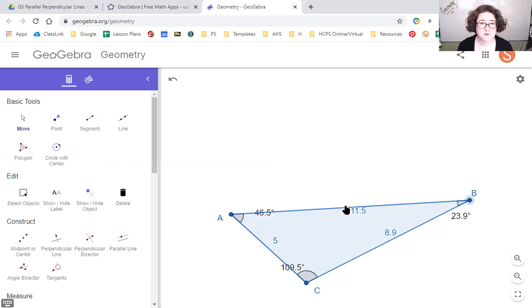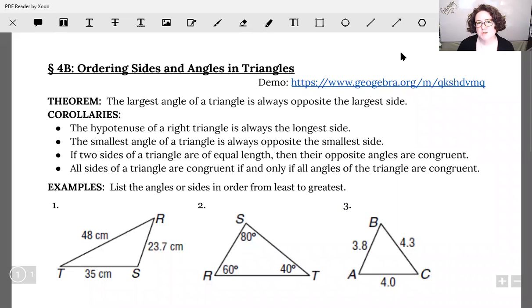Real quick, let me switch over to our notes. Let's look at some examples with actually applying this. Technically, what we figured out was our theorem, and we showed this with a diagram. A theorem is basically a rule that we've proven. The largest angle of a triangle is always opposite the largest side. We proved it. We looked at a diagram that showed us, yes, that's true.